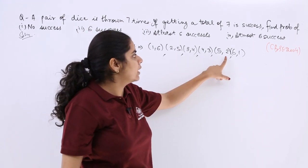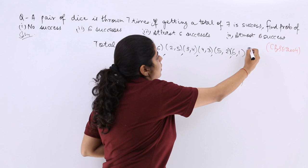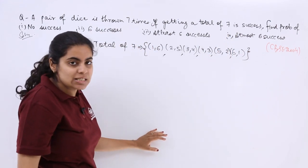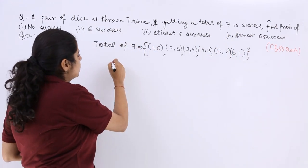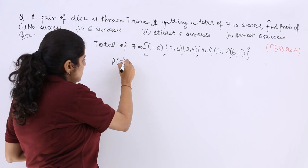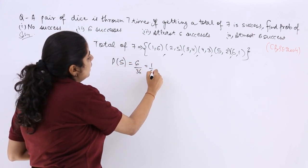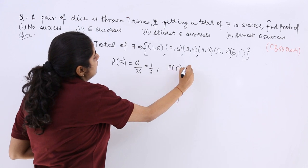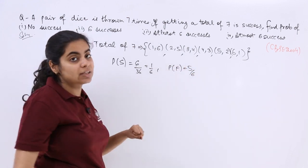So 36 would be the total favorable cases or outcomes. So the probability of a success is 6 over 36 which is 1 by 6. So the probability of a failure is 5 by 6, specifically speaking. Now probability of success is denoted by small p while that of failure is denoted by small q.